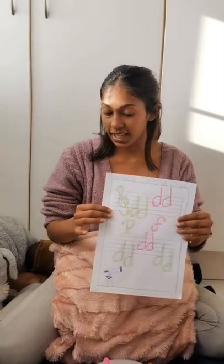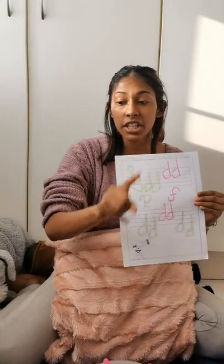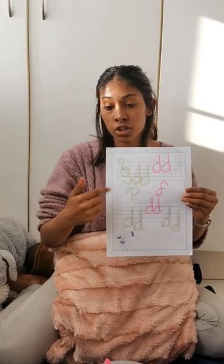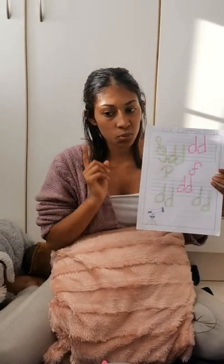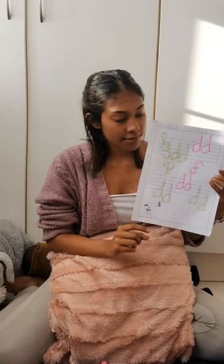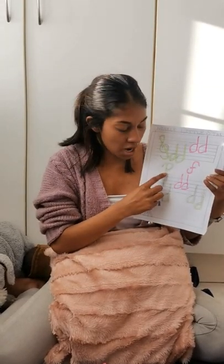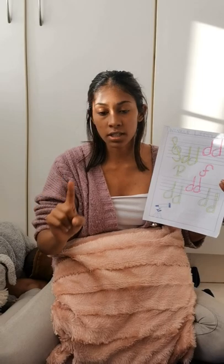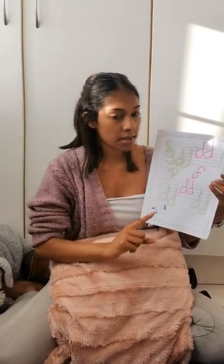Now, kids, in front of me I have a music sheet, and I've given each and every one of you a music sheet to follow. Remember, during the lesson we learnt that the symbol for Dr. Piano is P, and the symbol for Dr. Forte is F.